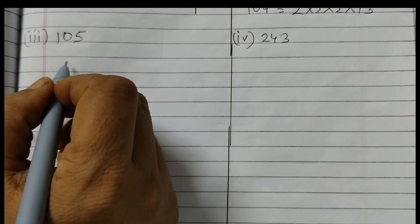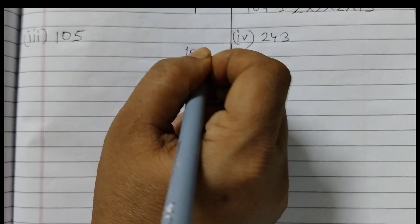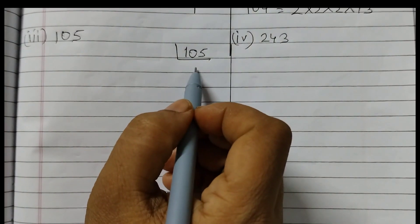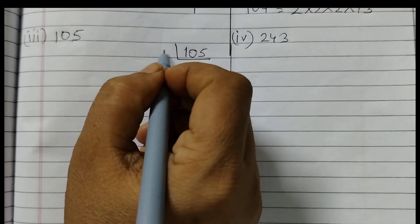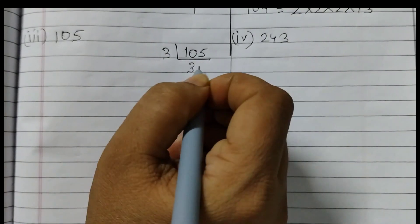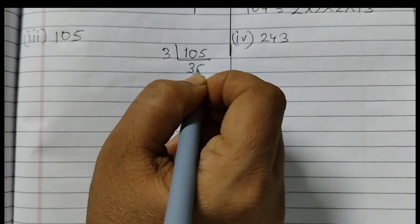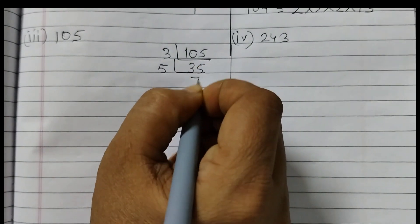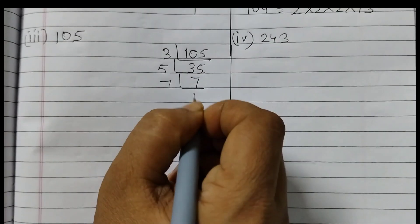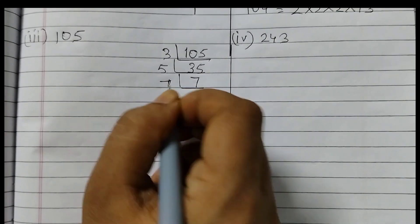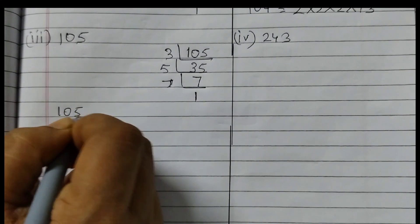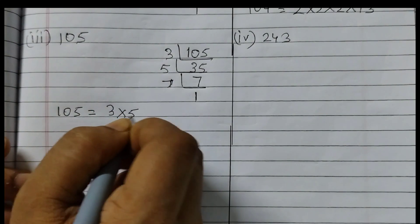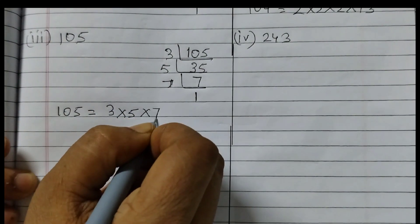Next number is 105. 105 is divisible by 3. So 105 ÷ 3 = 35, 35 ÷ 5 = 7, and 7 is prime. So 105 is equal to 3 × 5 × 7.